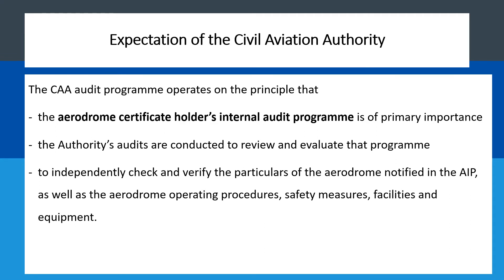We also observed that the Aerodrome Certificate Audit's internal audit program is of primary importance to the CA inspectors. The authority's audits are conducted to review and evaluate that particular program. So as an airport operator, your own internal audit program is what the CA is there to audit. The CA will be independently checking and verifying the particulars of the aerodrome notified in the AIP, as well as the aerodrome operating procedures, safety measures, facilities and equipment. When it comes to CAA inspections, they are only verifying or confirming what the airport operator has provided or promised to make available to its users.